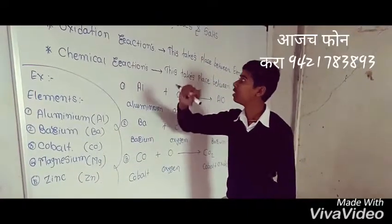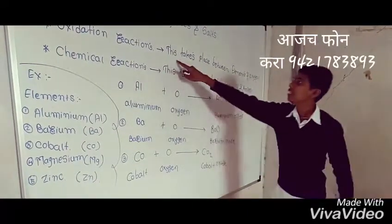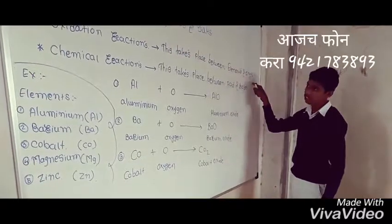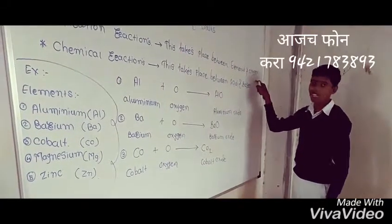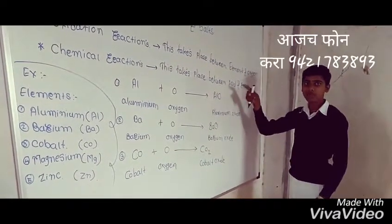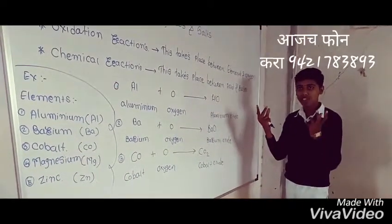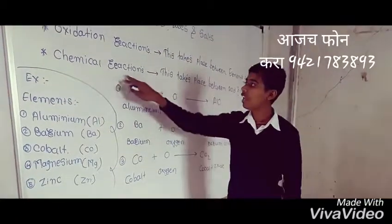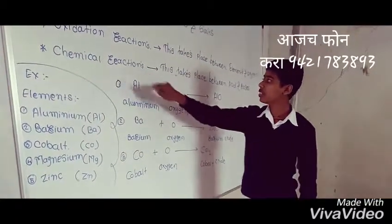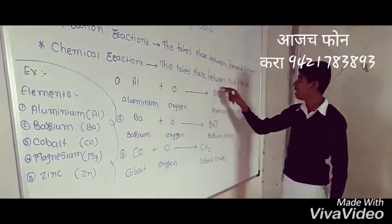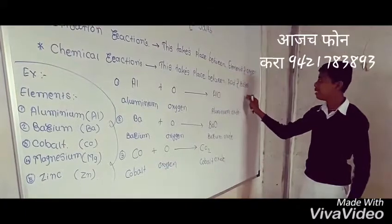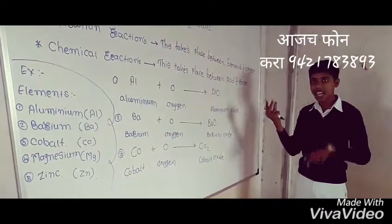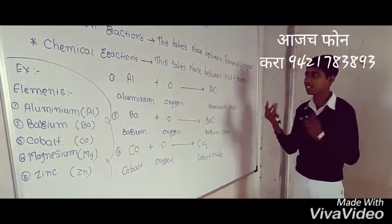Oxidation reaction means this takes place between elements and oxygen. And chemical reaction means this takes place between acid and base.